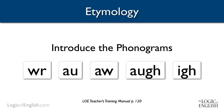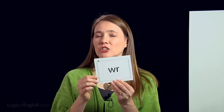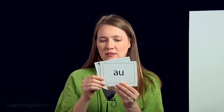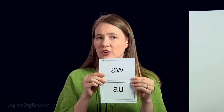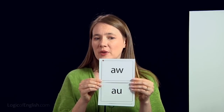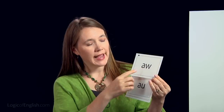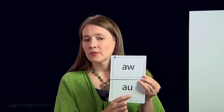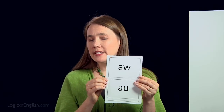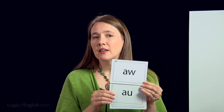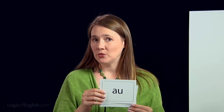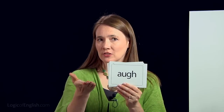We now have five new phonograms to learn. Let's begin with two-letter 'er.' Then we have two-letter 'aw' — notice both spellings begin with 'a' saying its third sound. One ends in 'u' and one ends in 'w.' Which may we use at the end of English words? That's right, we can use this one. We may not use the other because English words do not end in U, V, or J. This is 'aw' and 'af.'